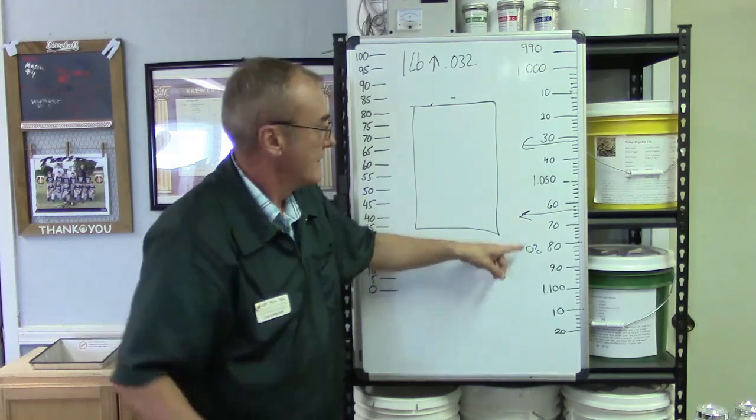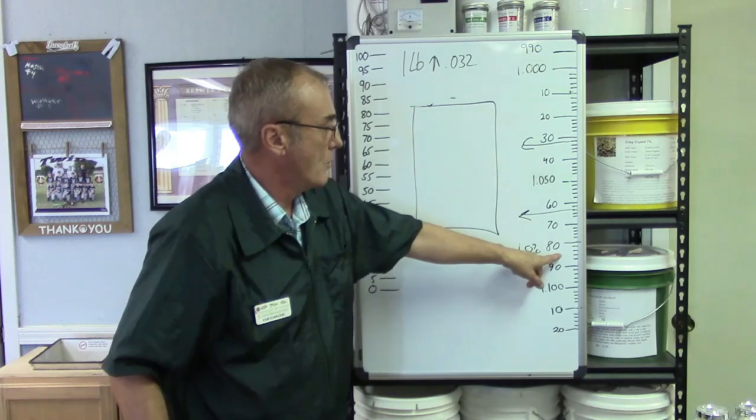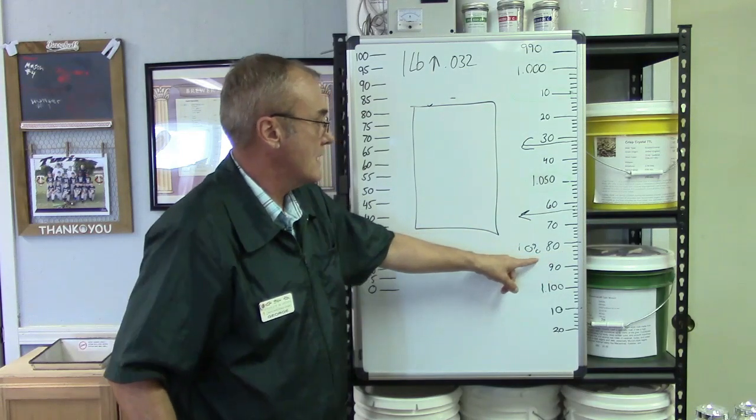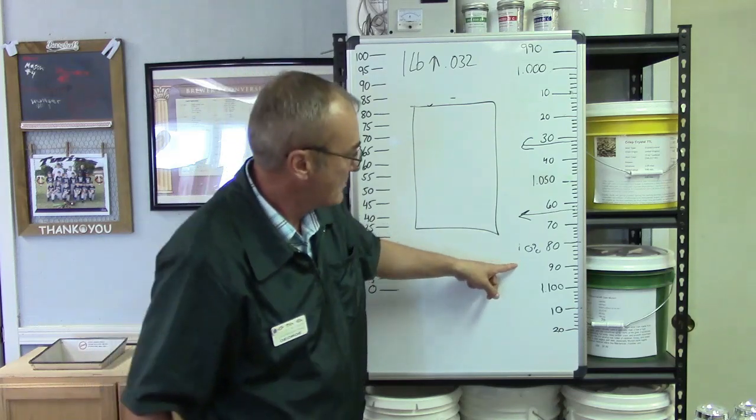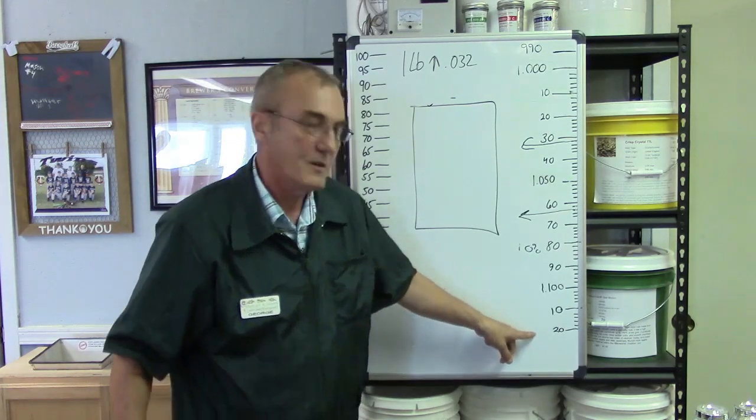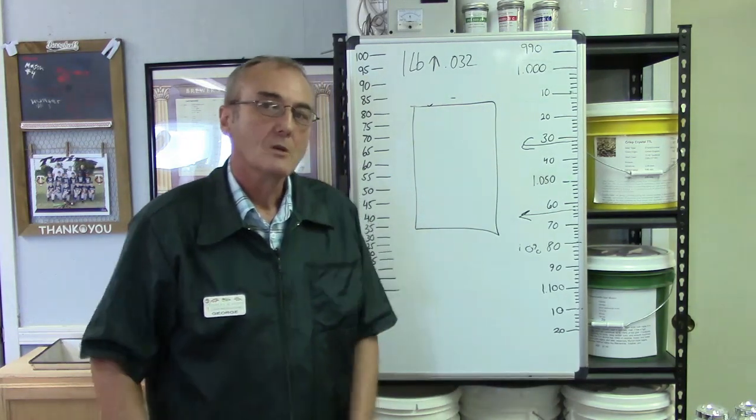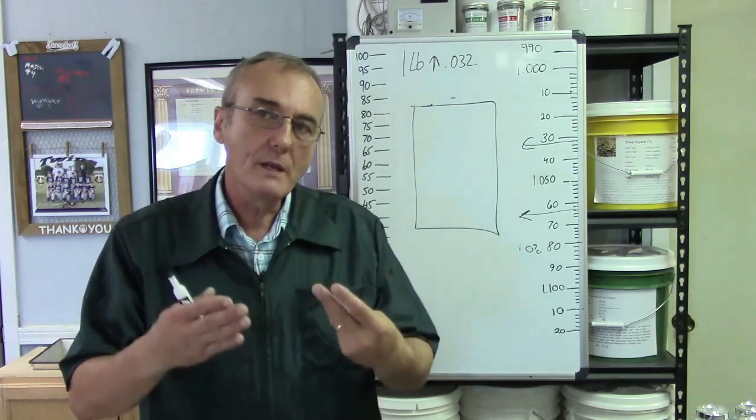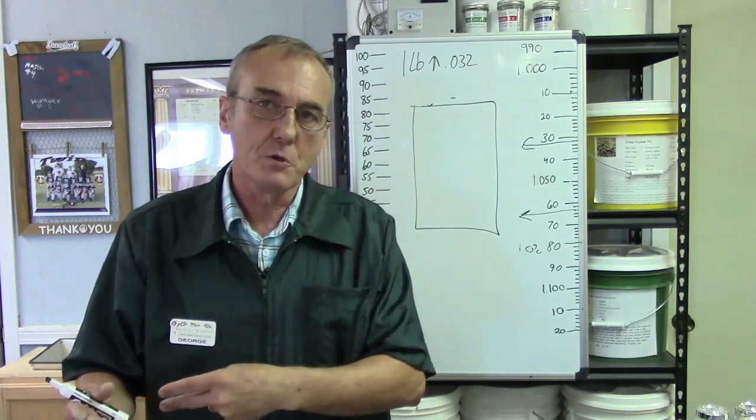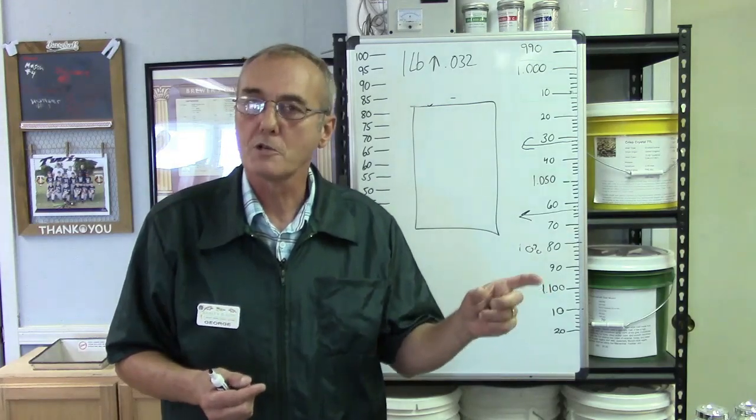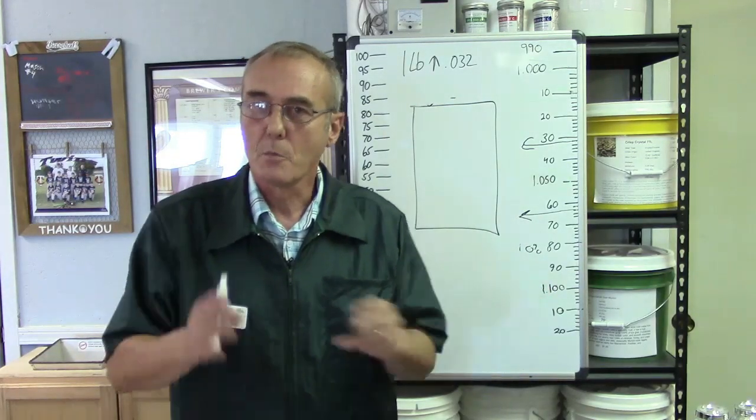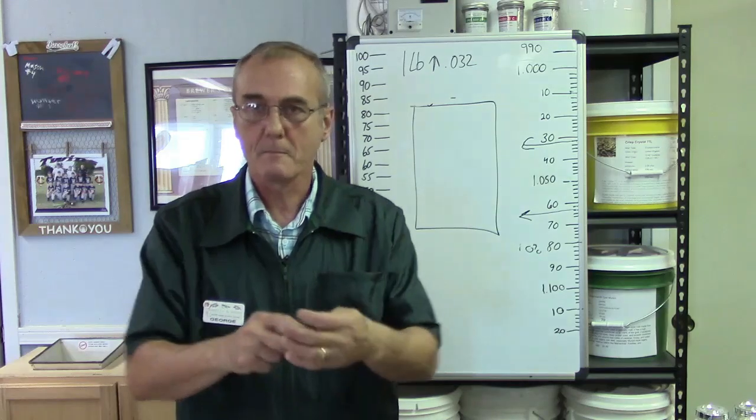You'll notice that 1.064 is a little below 10%. If I can get above 1.080, now I'm starting to get into the teens - 11, 12, 13, 14, 15%. So it's not only the type of yeast that you use, but it's the amount of fermentable sugars that are in your wash to start with.